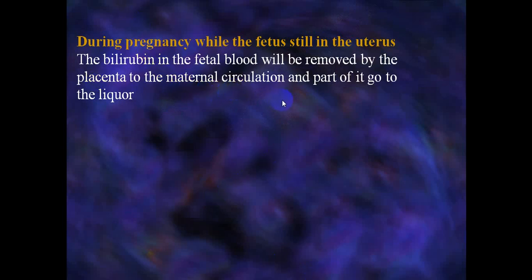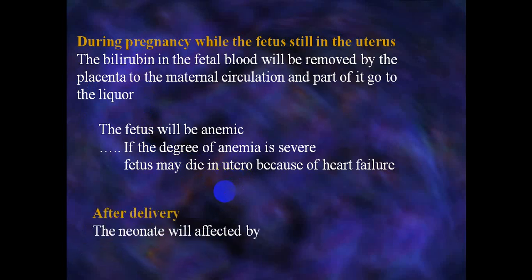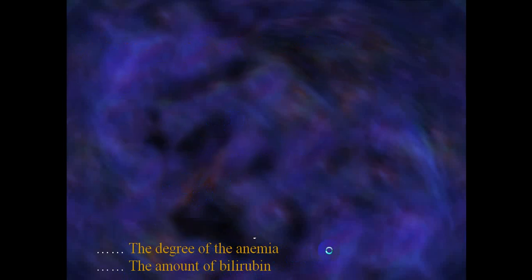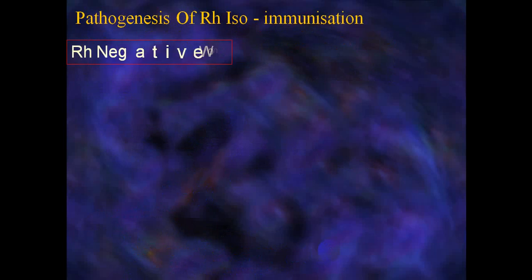During pregnancy while the fetus is still in utero, bilirubin in the fetal blood will be removed by the placenta to the maternal circulation, and part of it goes to the liver. The fetus will be anemic if the degree of anemia is severe in utero, potentially causing heart failure. After delivery, the neonate will be affected by severe jaundice and anemia. The degree of anemia depends on fetal RBC destruction, and the amount of bilirubin produced depends on fetal RBC destruction as well.